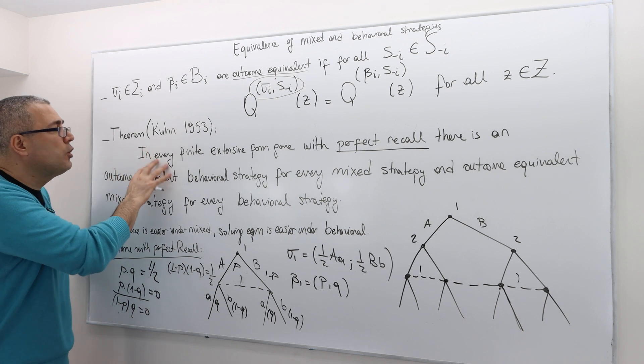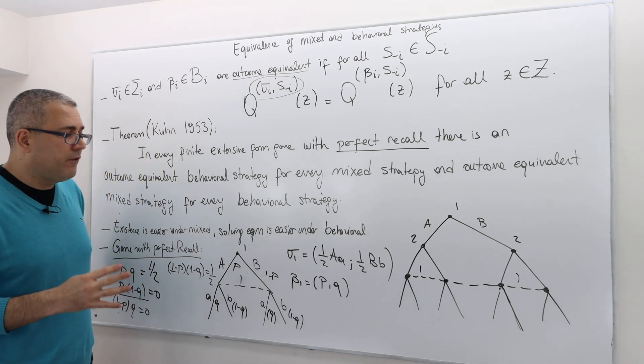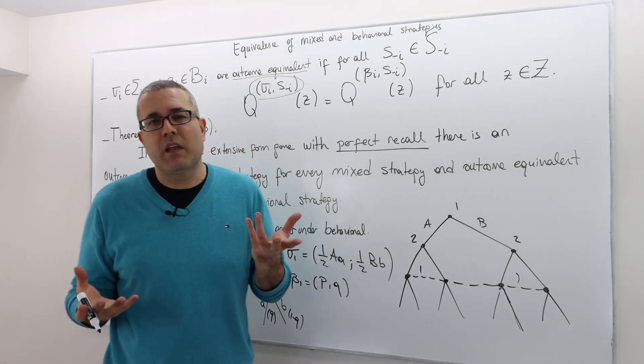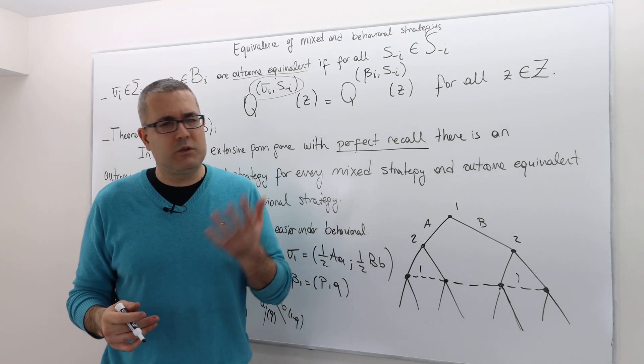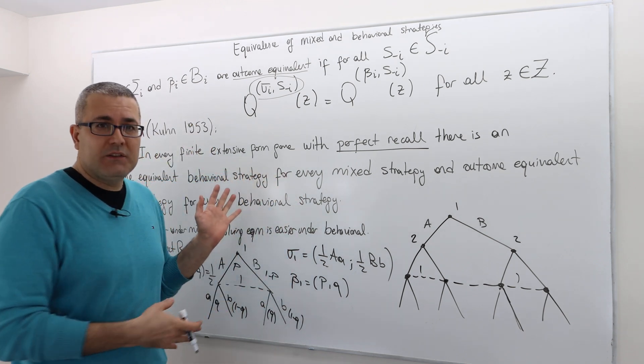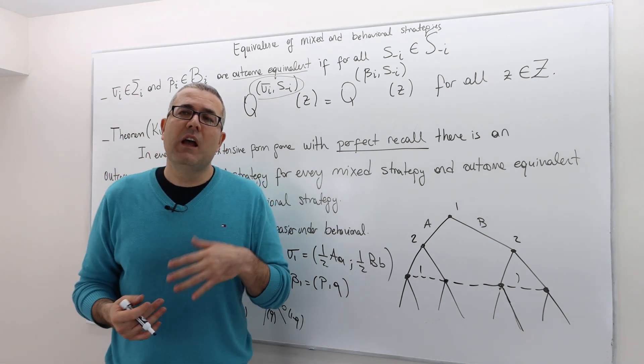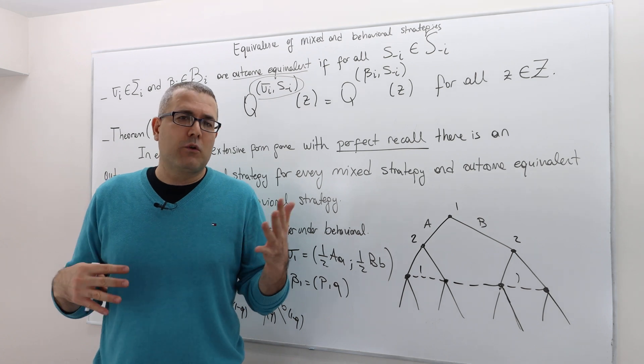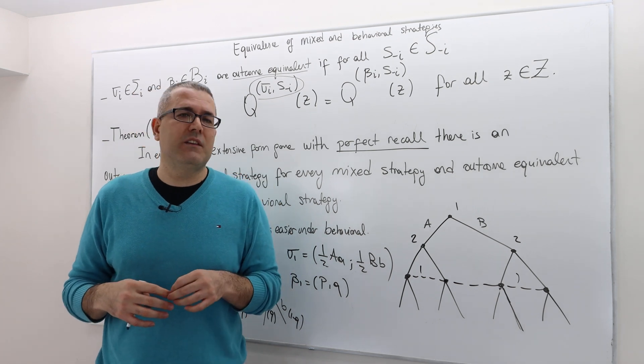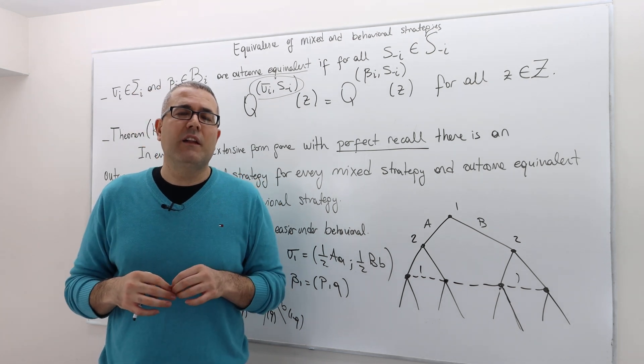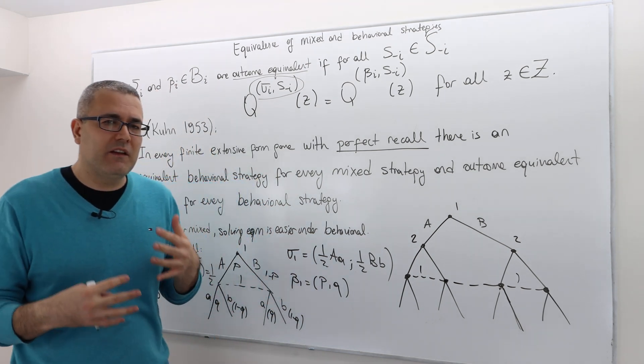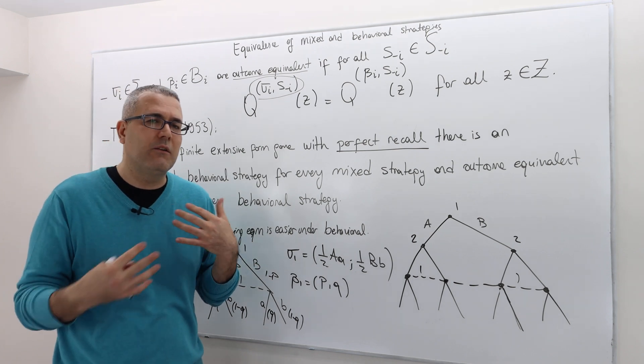So the Kuhn's theorem will not hold if the game has imperfect recall. The good thing or the nice thing is that in game theory, we almost always talk about games with perfect recall. One reason is this. And the second reason, this imperfect recallness or forgetfulness actually brings lots of other complications, like the consistency of strategies, etc. And so the game becomes hard to handle. And to be honest, we don't really have a sound and reasonable theory how to deal with those games.